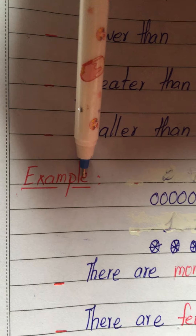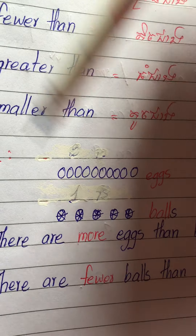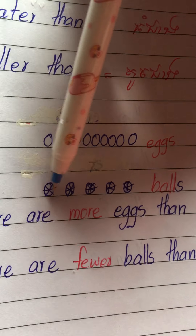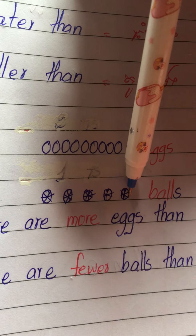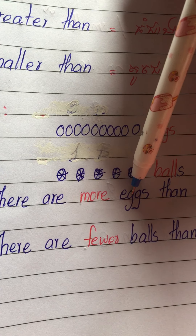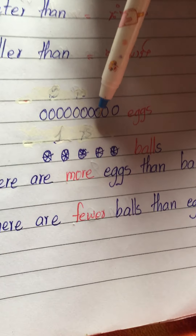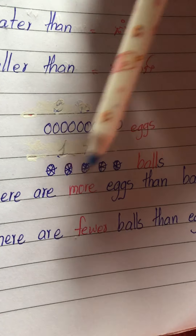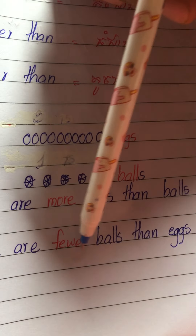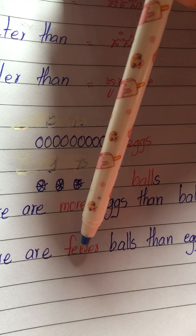Now I give you an example. Here I have ten eggs — one, two, three, four, five, six, seven, eight, nine, ten — and five balls — one, two, three, four, five. We can say: there are more eggs than balls, because ten is a lot more than five.